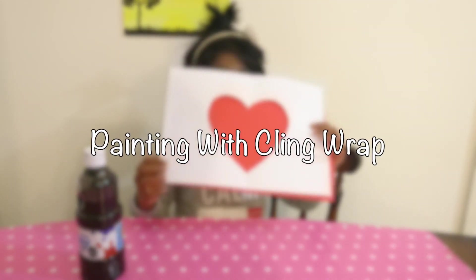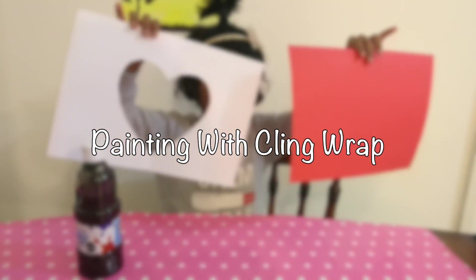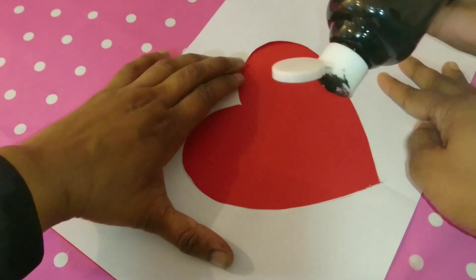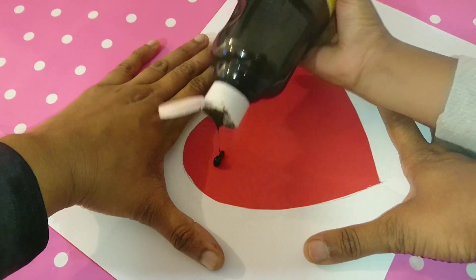Next, we are going to do a painting using cling wrap. For this we have used a heart shaped stencil and colored paper. I placed the stencil over the paper and added paint onto the middle as shown.